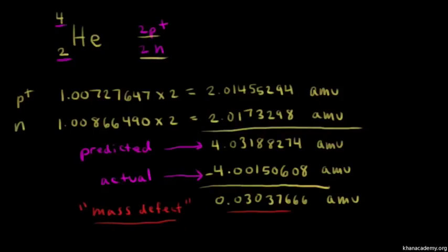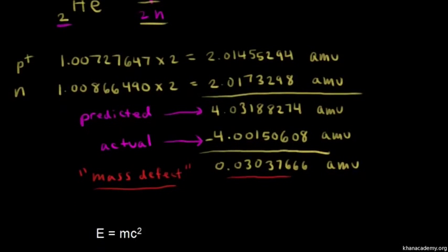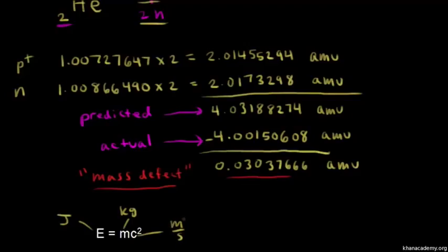This is the one most people know: E is equal to MC squared, where E refers to the energy in joules, M is the mass in kilograms, and C is the speed of light in meters per second — and we're squaring that, so it'd be meters squared over seconds squared.